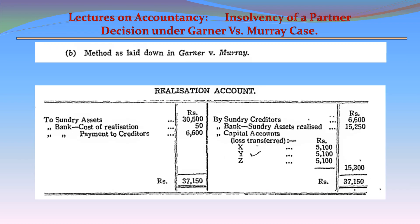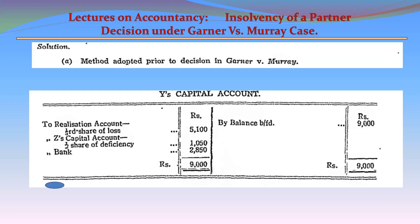X's capital account: by balance brought down 12,000; to realization account (one-third share of loss) 5,100; to Z's capital account (half share of loss) 1,050; by bank 5,850. Y's capital account: by balance brought down 9,000; to realization account (one-third share of loss) 5,100; to Z's capital account (half share of loss) 1,050; by bank 2,850.